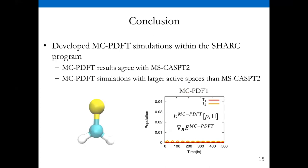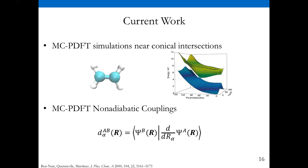In conclusion, my work has been using MCPDFT as the electronic structure method for simulations within the SHARC program. Our results so far indicate that they agree with MS-CASPT2, and we're able to go to a larger active space than MS-CASPT2. We're currently looking at MCPDFT simulations near conical intersections. Since this application was more on intersystem crossing, we want to start looking at internal conversions. That's going to require looking at state interaction methods of MCPDFT. In addition, it's requiring us to develop nonadiabatic couplings for the nuclear dynamics to transition amongst these electronic states.